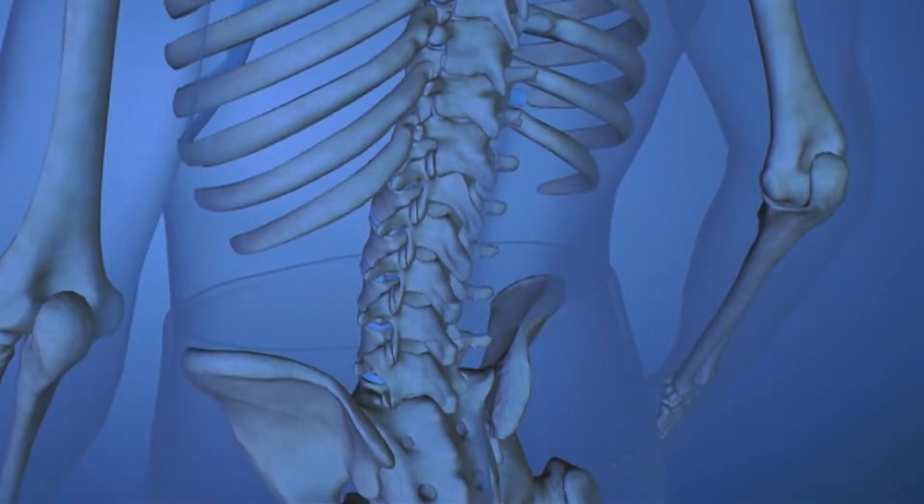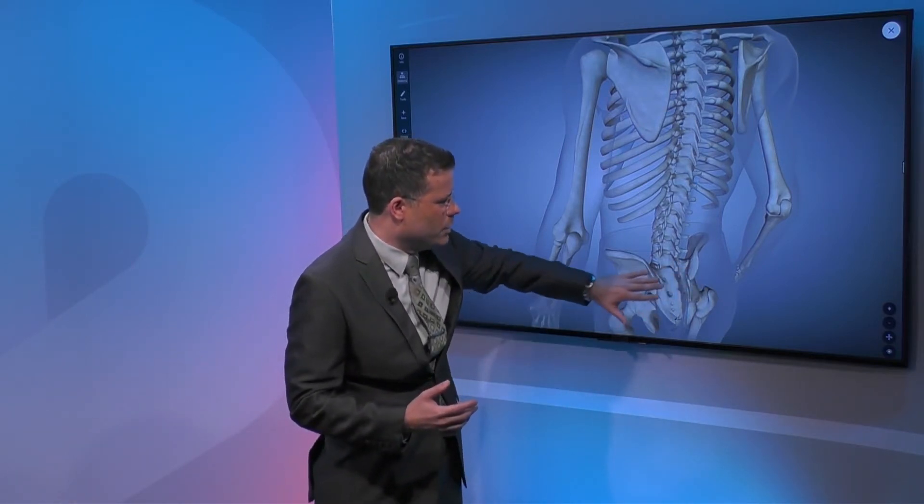Another source of back problems is the bone itself. As we age, bones can become compressed and develop fractures. The bones become more brittle — that's what we call osteoporosis — and the bone, from just a minor trauma or even spontaneously from sitting down, can collapse and cause acute pain. We most commonly see this in women over the age of 70.